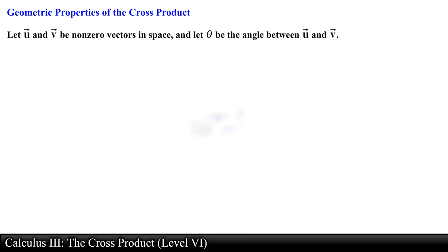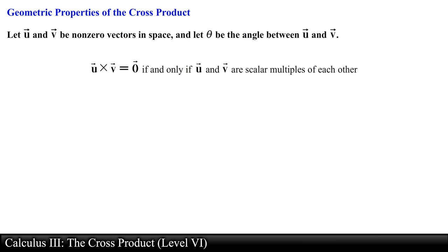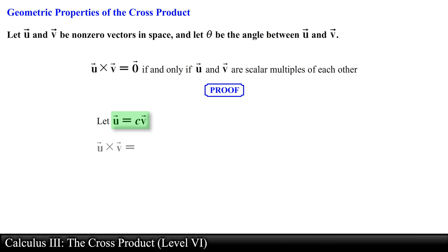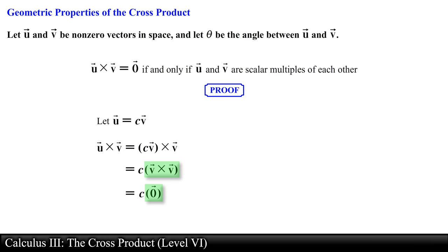The third geometric property: vector u crossed with vector v equals the zero vector if and only if vector u and vector v are scalar multiples of each other. In other words, two nonzero vectors u and v are parallel if and only if their cross product is the zero vector. We prove this by noting that if vector u is a scalar multiple of vector v, we replace vector u with scalar c times vector v, then apply the algebraic property of cross products to get c times the cross product of vector v with itself. Since a vector crossed with itself equals the zero vector, the entire expression simplifies to the zero vector.